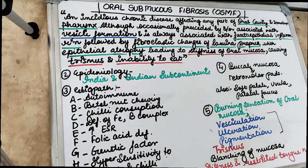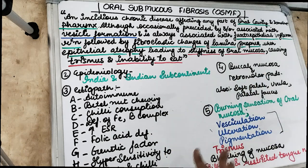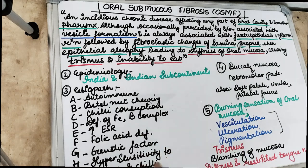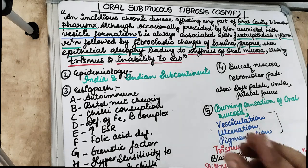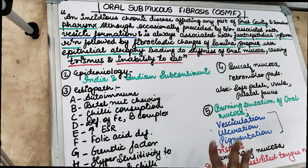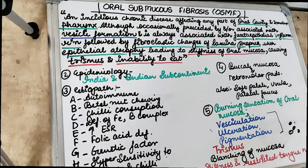We can also see blanching of the mucosa — this is the earliest sign. We see blanching or a marble-like appearance of the oral mucosa. This blanching occurs because of impairment of local vascularity — due to fibroelastic changes in the lamina propria, vascularity is impaired, and because of this the mucosa appears slightly opaque or white. This whitening often takes place in spots, giving a marble-like appearance clinically.